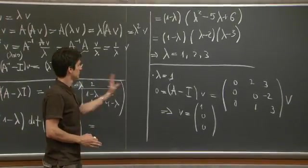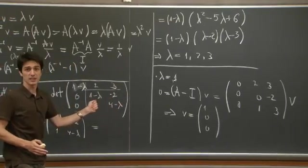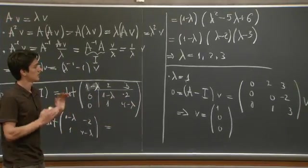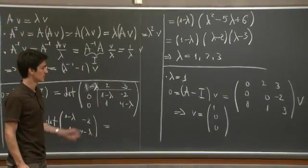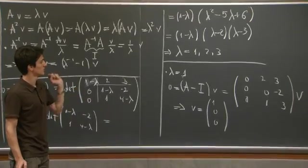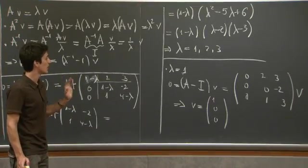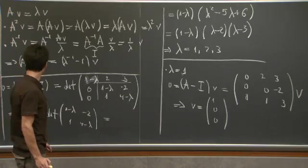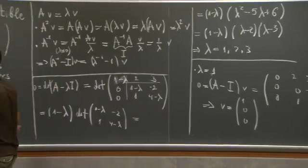So we can do the same procedure with the other two eigenvalues. And we'll get an eigenvector for each eigenvalue. And in the end, we go back here.